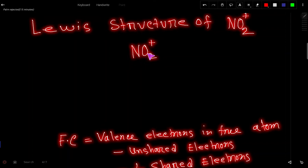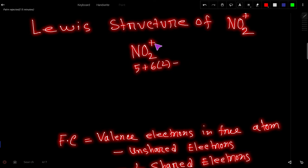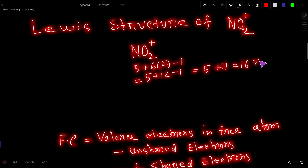Lewis structure of NO2+, the nitronium ion. First we have to find the valence electrons. Nitrogen is in group 5A, so it has five valence electrons. Oxygen is in group 6A, so it has six valence electrons. We multiply by two because we have two oxygen atoms. For a positive charge, we subtract one valence electron. So we get 5 plus 12 minus 1, which equals 16 valence electrons total.